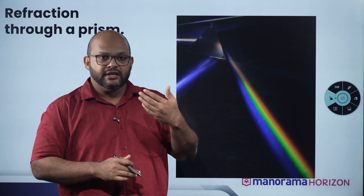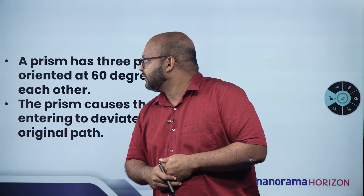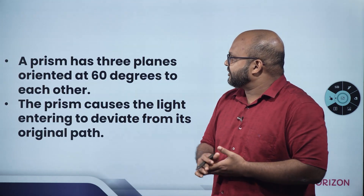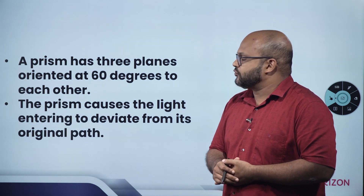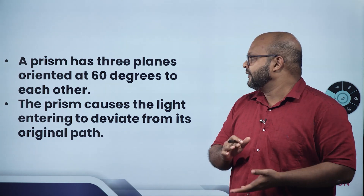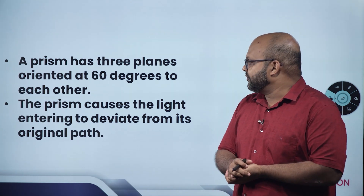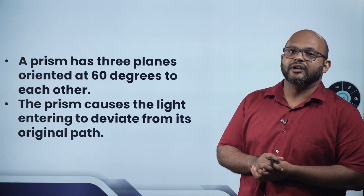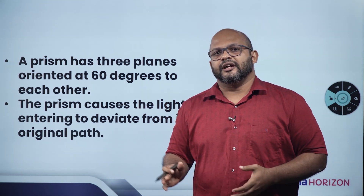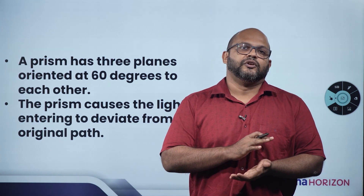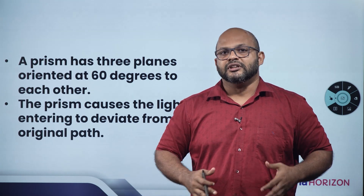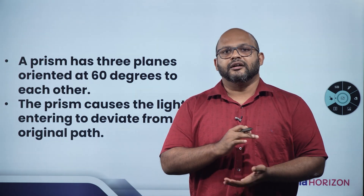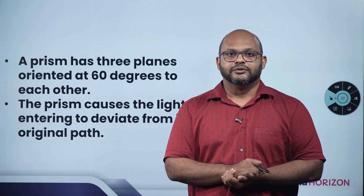To recap: a prism has three planes oriented at 60 degrees to each other, and a prism causes light entering it to deviate from its original path. We have revised the human eye and colorful world chapter for the exams. We hope to see you again here at Manorama Horizon. Thank you.